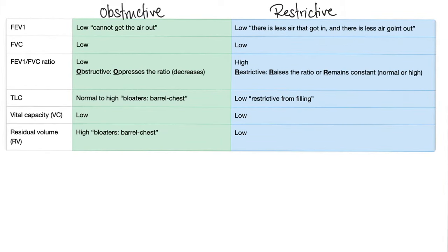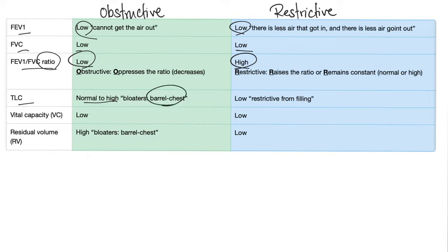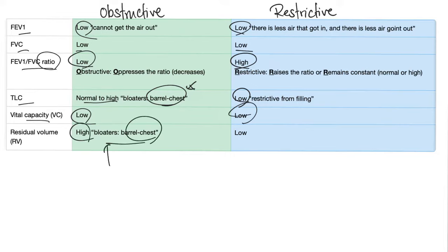Pulmonary function tests: In obstructive lung disease, FEV1 is low; in restrictive, it's also low. FVC is low in both. The FEV1/FVC ratio is low in obstructive but normal or high in restrictive. Total lung capacity is high or normal in obstructive — that's why we call them barrel chest — and low in restrictive. Vital capacity is low in both. Residual volume is high in obstructive — hence barrel chest and blue bloaters — and low in restrictive.